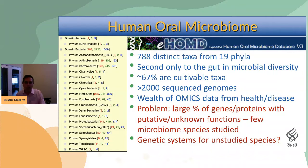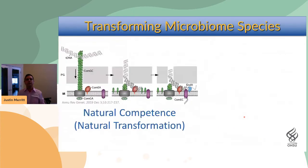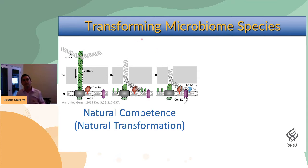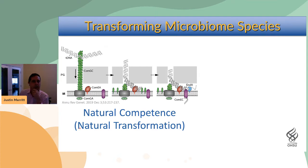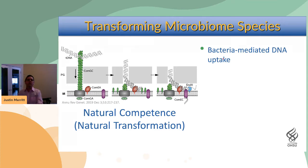For a while, my lab has been working on creating new genetic systems for organisms of interest that we find in these different types of omics studies. To create a genetic system, the first key — in fact, the rate-limiting step — is how you transform these organisms. This is often the most challenging part. The approach we like to take is using natural competence, sometimes synonymously referred to as natural transformation, which basically means bacterial-mediated DNA uptake.